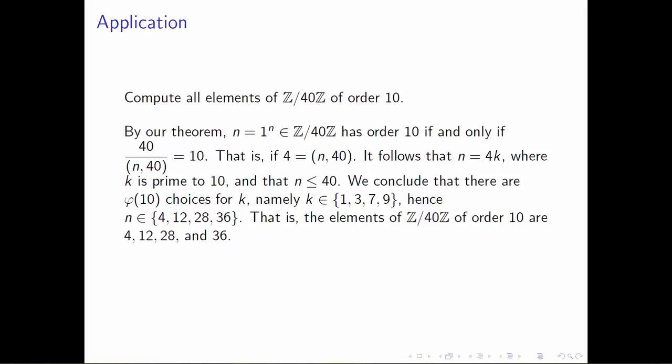This number n will have order 10 if and only if 40—the order of element 1 in Z mod 40—divided by the greatest common divisor of n and 40 equals 10. This gives us an equation. We can clear denominators and divide both sides by 10, and what results is that we will have an element of order 10 in Z mod 40 if and only if 4 equals the greatest common divisor of n and 40.